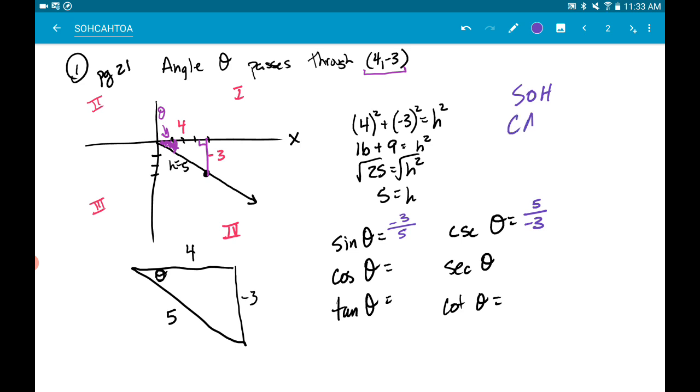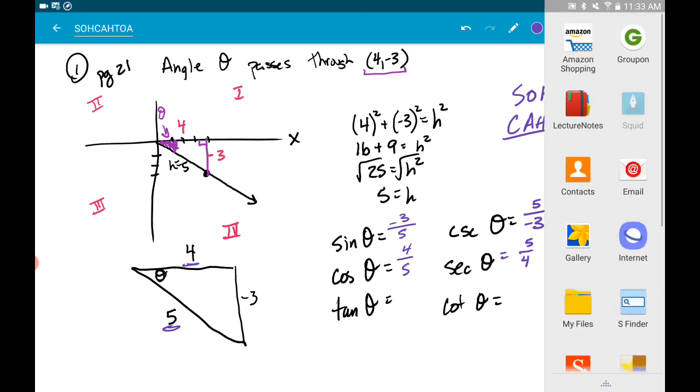Cosine is CA, which is adjacent. That's adjacent, that's hypotenuse. We got 4 over 5, which would make this guy, you guessed it, 5 over 4. Just flip it.